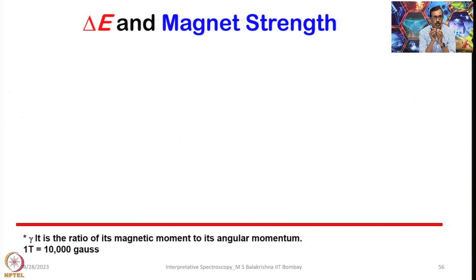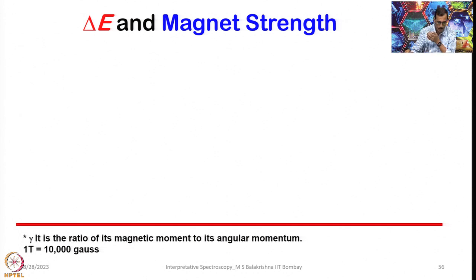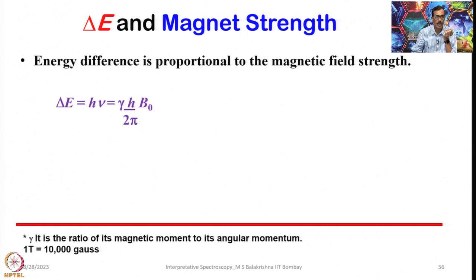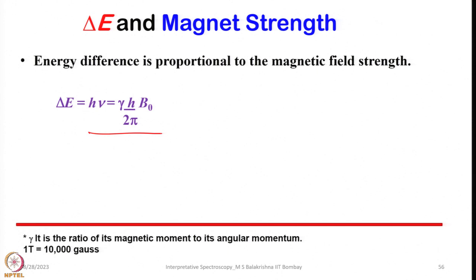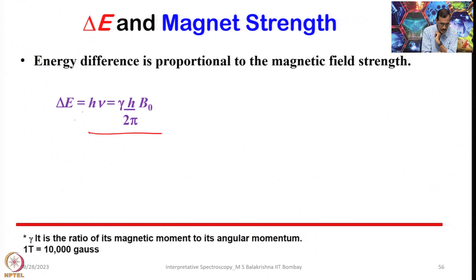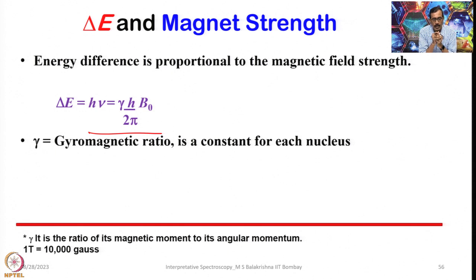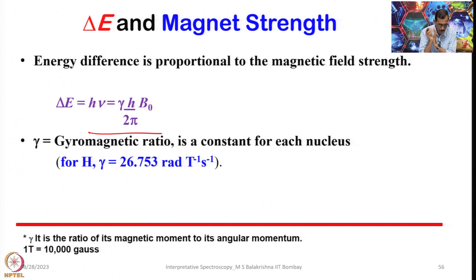The energy associated with nuclear transitions is proportional to the magnet strength. The energy difference between two nuclear spin states is directly proportional to the magnetic field strength, given by: h-nu equals gamma times h times B0 over 2 pi. Simplified, nu equals gamma B0 over 2 pi. Gamma, the gyromagnetic ratio, is a constant for each nucleus; for hydrogen it is 26.753 radians per tesla per second.